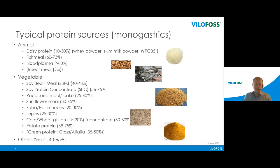Blood plasma has some challenges — some markets do not accept animal proteins, and there have been concerns about ASF risk of transmitting disease via blood plasma, though handled correctly this risk should be basically non-existing. New protein sources are also coming into the market. Recently in the EU there was an opening for utilizing insect protein meal in animal feeds for monogastrics, and the properties of insect protein meal will likely prove more similar to traditional animal proteins than to vegetable proteins.